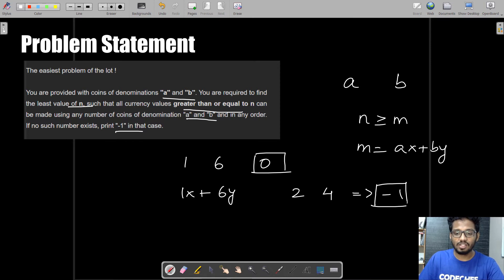In this case, you cannot say strictly there is an n above which all numbers can be represented in the form 2x + 4y. I hope you understood the test cases. Now let's see how to approach this problem.